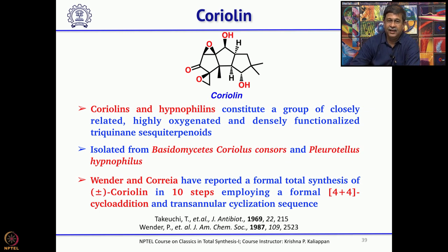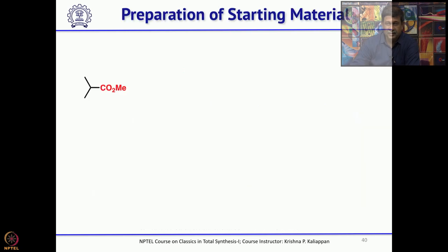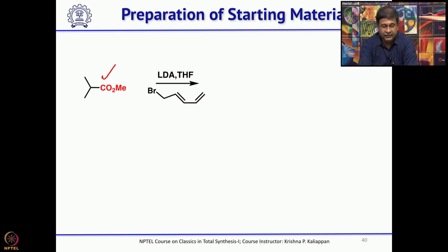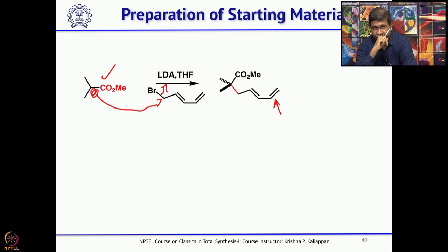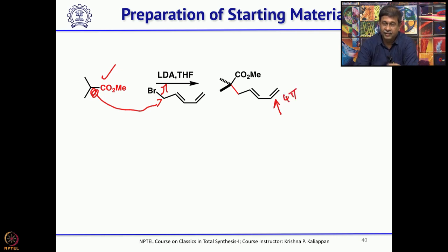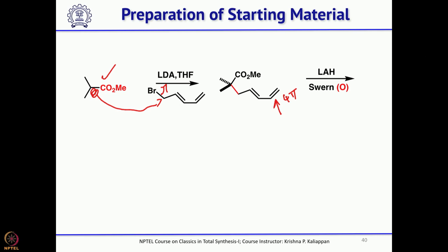For this synthesis the starting material is methyl isobutyrate. You take methyl isobutyrate, treat with LDA to generate an anion, then alkylate with the substituted allyl bromide to introduce a diene. Since the key reaction is 4+4, you now have one 4π unit. You need another 4π unit, so you reduce the ester to a primary alcohol, oxidize to the aldehyde, then add another 4-carbon unit as the corresponding organolithium reagent to this aldehyde.